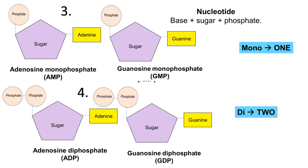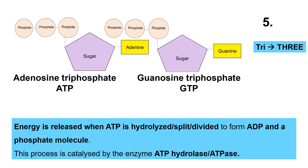In the fourth image, you can see the addition of another phosphate group, so you can no longer call it monophosphate — now you have two, so it's a di: adenosine diphosphate or guanosine diphosphate. With three phosphate groups, it's a tri: adenosine triphosphate or guanosine triphosphate. Energy is released when ATP is hydrolyzed to form ADP plus a phosphate molecule. This is known as ATP hydrolysis or ATPase.